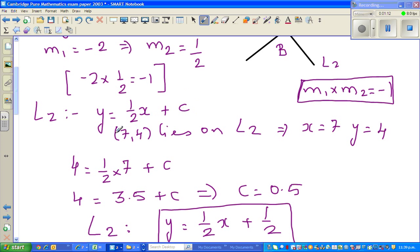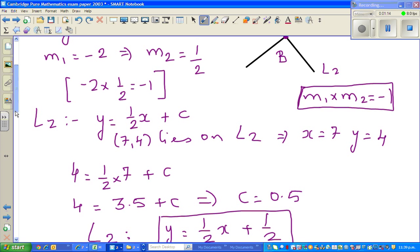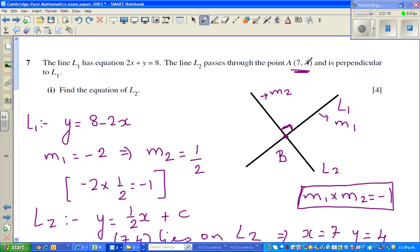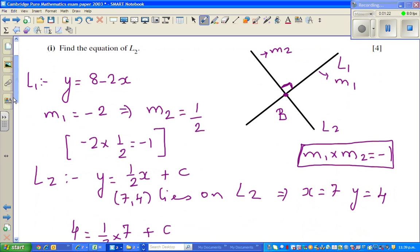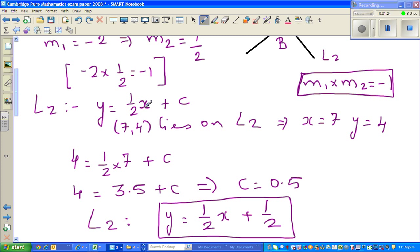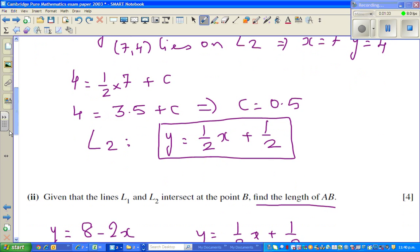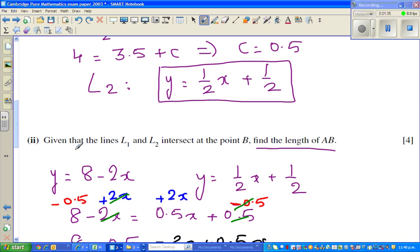And we figured out C by putting 7, 4 because they also gave us that (7,4), excuse me, is a point on this line. So I put the value of X as 7 and Y as 4 in the equation. And I got C is 0.5. So that was the second equation.